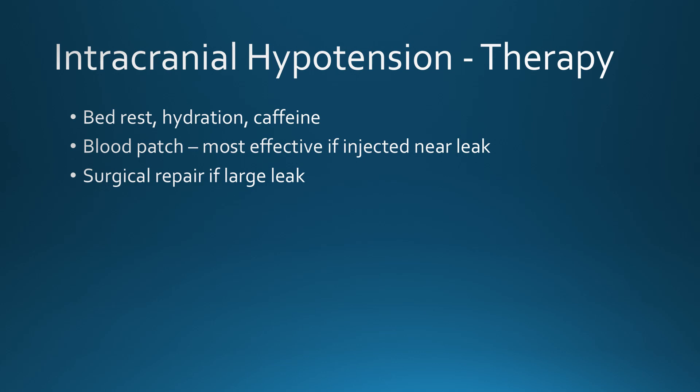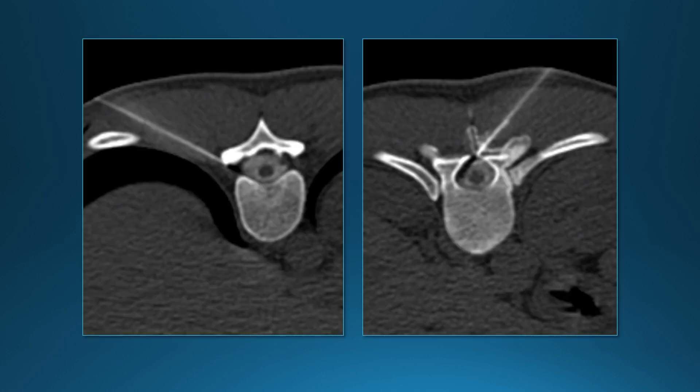To treat these patients, conservative measures are usually tried first: bed rest, hydration, and caffeine. Blood patch is most effective if injected near the leak. Occasionally surgical repair is needed if it's a very large or very fast leak. This patient was treated with both interlaminar and transforaminal blood patches; after about four or five of these, the leak finally resolved.